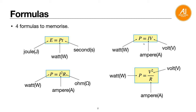It basically depends on what information they give you in the question. If they give you current and voltage, use P equals IV. If they give you current and resistance, use P equals I squared R. Or if they give you voltage and resistance, use P equals V squared over R to find the power.